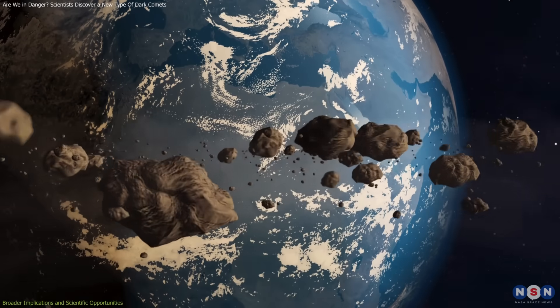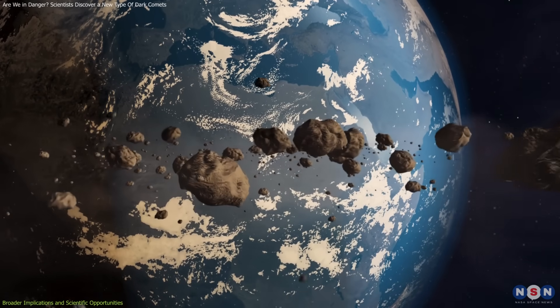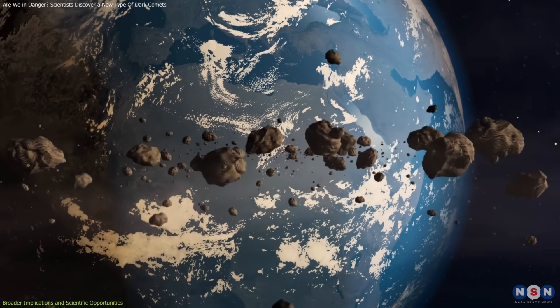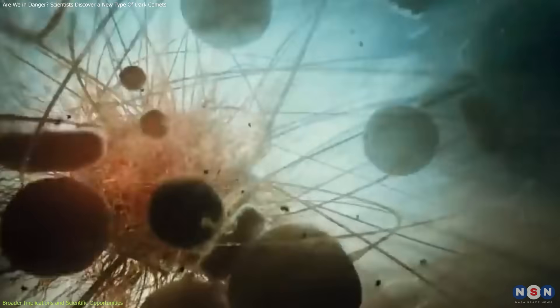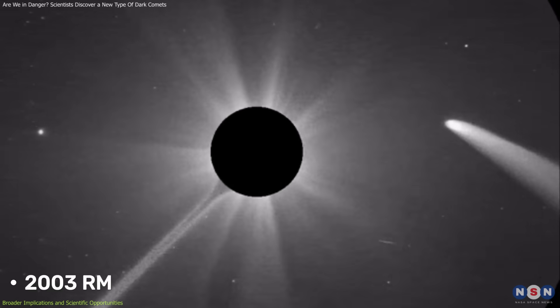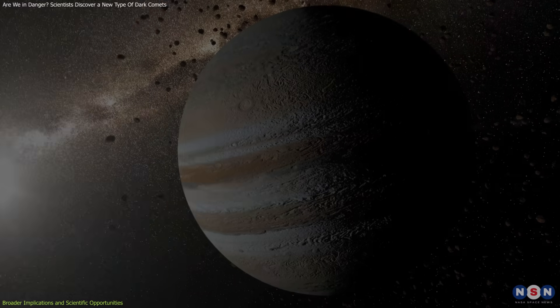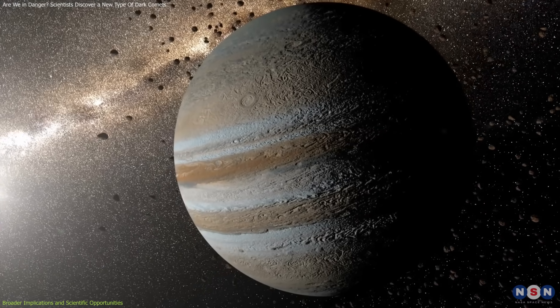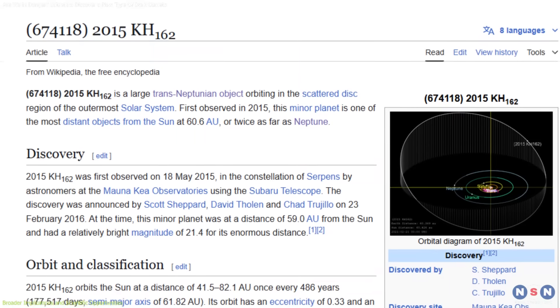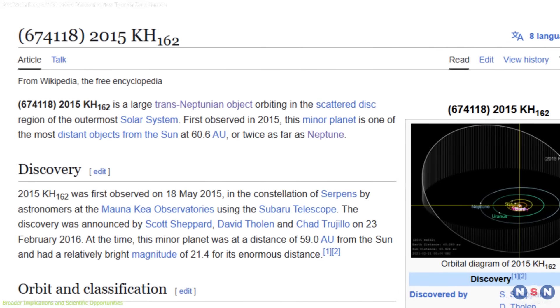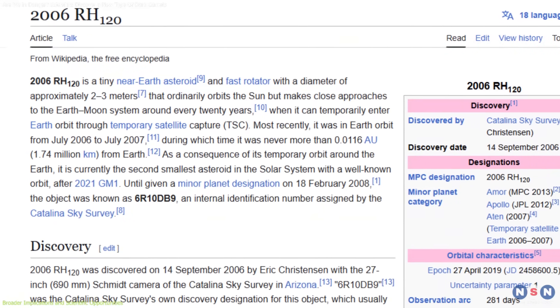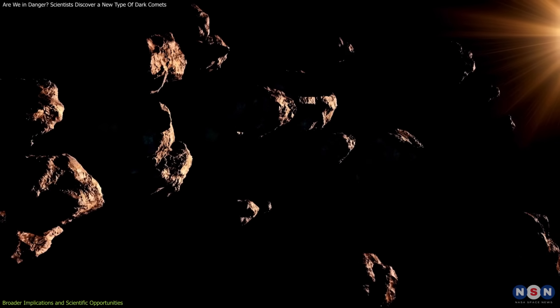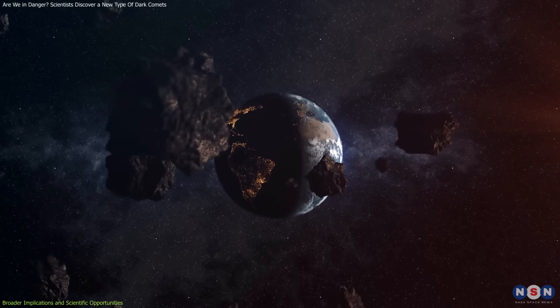One of the most exciting hypotheses is that dark comets played a significant role in delivering water and organic materials to our planet, laying the groundwork for life. Examples like 2003RM, along with other Jupiter family dark comets such as 2015KH162 and 2006RH120, showcase the potential diversity of these objects and their possible contributions to planetary evolution.